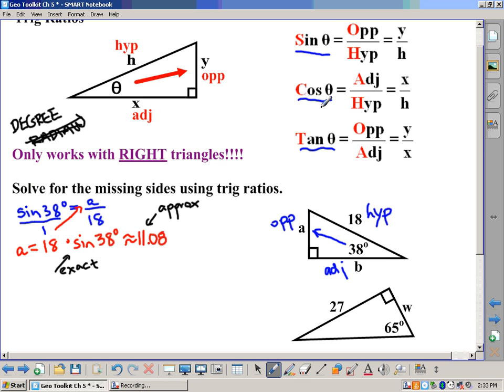So what we'd say in this case is we'd say that cosine of 38 degrees equals B, that's the adjacent side, divided by the hypotenuse, which is 18. Once again, put it over 1. 1 times B is B, and 18 times cosine 38 degrees. Grab your calculator.